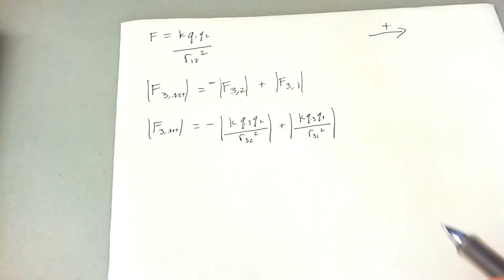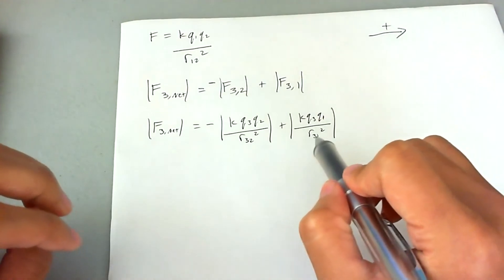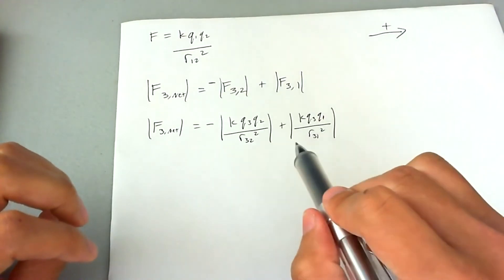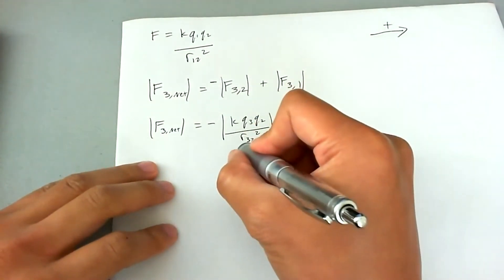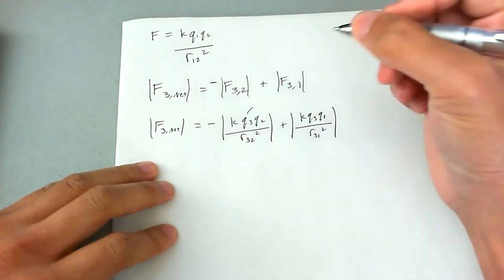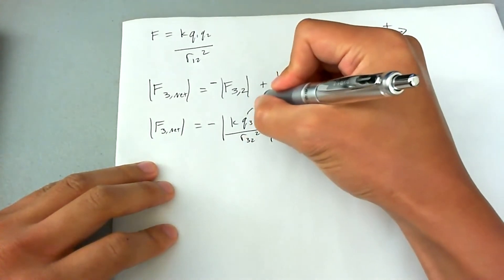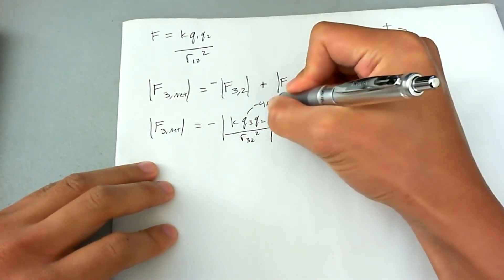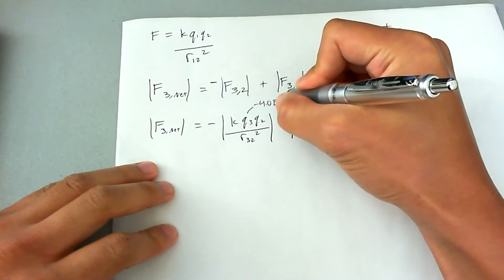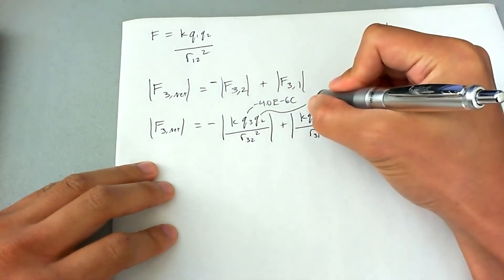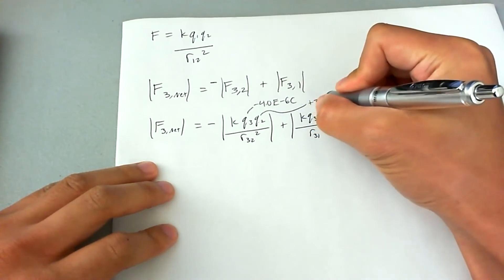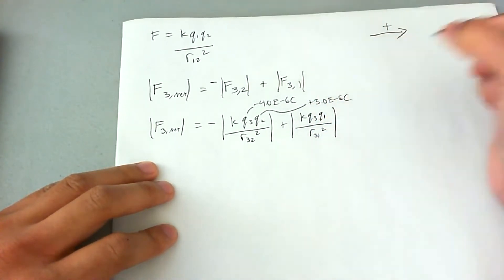And so the sum of these two parameters are going to equal the net force that's acting on charge three. This q3 is given to be negative 4.0 times 10 to the negative 6 coulombs. q2 is going to be positive 3.0 times 10 to the negative 6 coulombs.